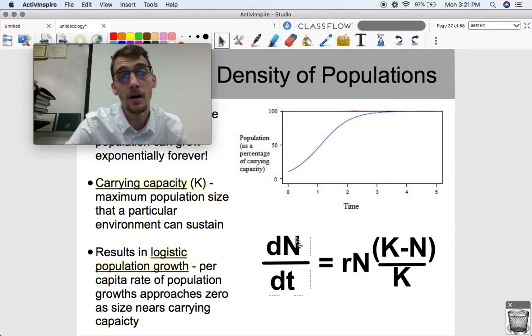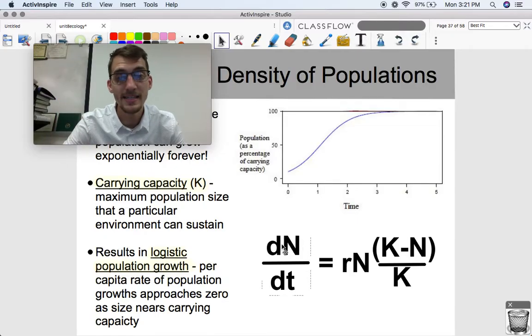So just like our equations that we looked at in 8.3, dN/dt is representing population growth. What this is, population growth under a logistic growth model, is the per capita rate of increase times the number of individuals in the population.